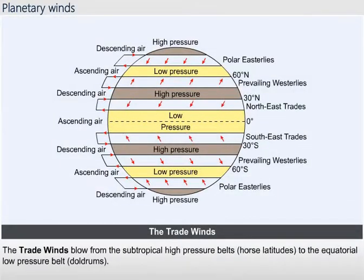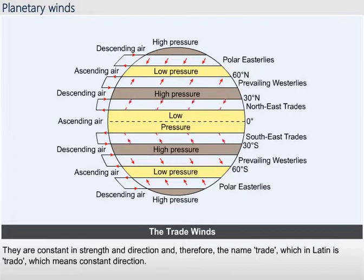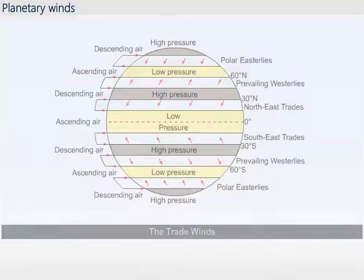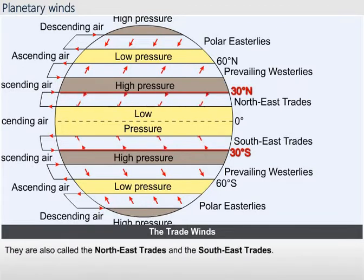The trade winds blow from the subtropical high-pressure belts (horse latitudes) to the equatorial low-pressure belts (doldrums). They are constant in strength and direction — the name 'trade' comes from the Latin 'trado,' meaning constant direction. These winds blow towards the equator from 30 degrees north from the northeast in the northern hemisphere, and from 30 degrees south from the southeast in the southern hemisphere, known as the northeast trade winds and the southeast trade winds respectively.